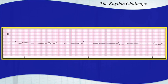This is a 3rd degree AV block. It shouldn't be that difficult to identify these P waves throughout with no association with the QRS complexes. 3rd degree AV block.